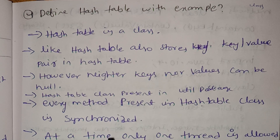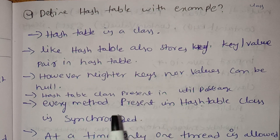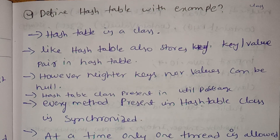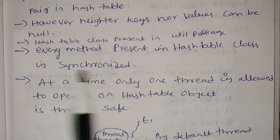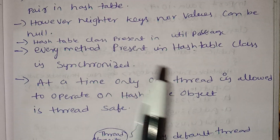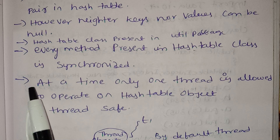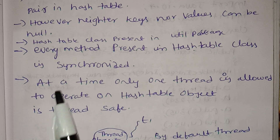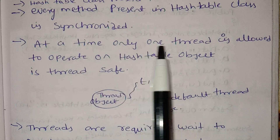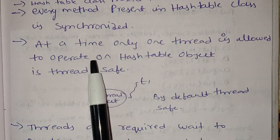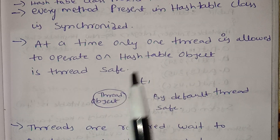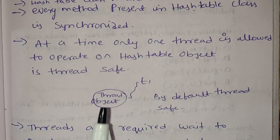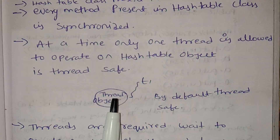Every method in the hash table is synchronized. Synchronization means that at any given time, only one thread is allowed to operate on the hash table. This makes hash table thread safe.